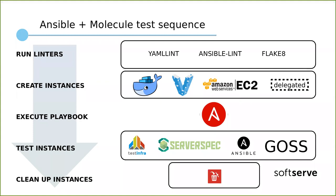After running the role, we make sure our role is successful and that planned changes have been applied to each instance. To verify changes, it is possible to use testinfra — for those familiar with Ruby — or for those who prefer simplicity and YAML, better to use Ansible or Goss verifier. The last step is to terminate any infrastructure created in the first step to leave everything clean. You should also know that additional steps and their order can be changed.